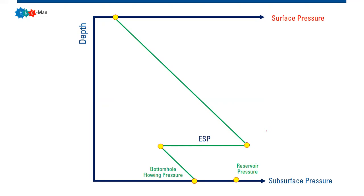The second important pressure point is the bottom hole flowing pressure, or Pwf. The difference between the average reservoir pressure and the bottom hole flowing pressure is called drawdown. The drawdown will dictate or influence the flow rate — as you increase the drawdown, the flow rate will increase as well.